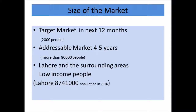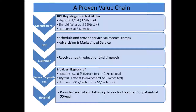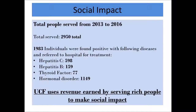Our market size in the next 12 months is 2,000 people, and the addressable market in four to five years is more than 80,000 people. Our value chain: UCF buys diagnostic test kits for hepatitis B, C, thyroid, and hormones; schedules and provides services via medical camps; and markets our services. Customers receive health education and diagnosis, while the human diagnostic lab provides diagnosis to paying customers to earn revenue, and we provide follow-up to hepatitis C patients.